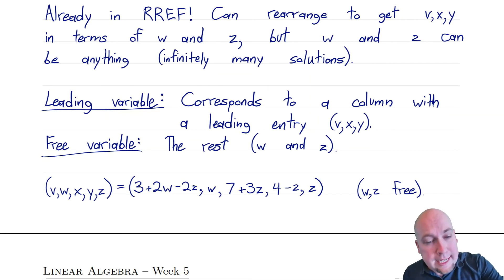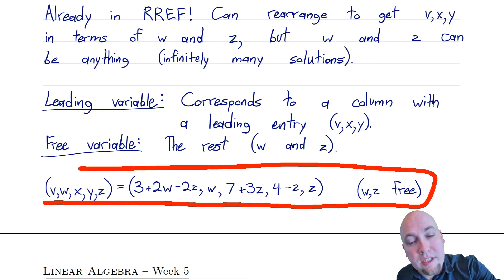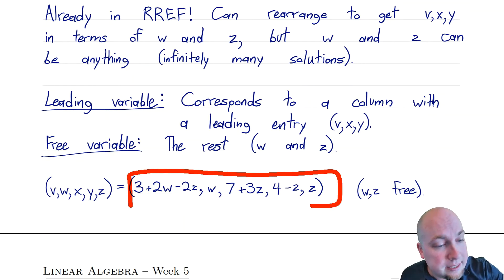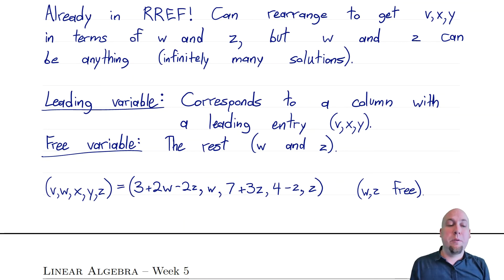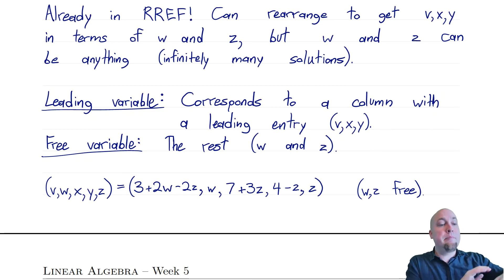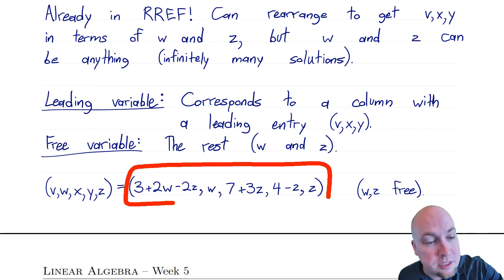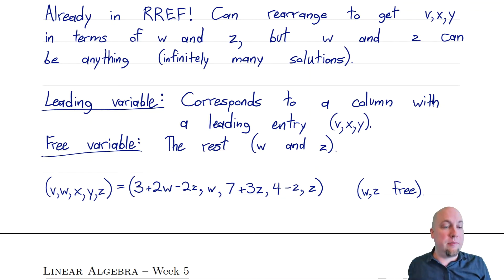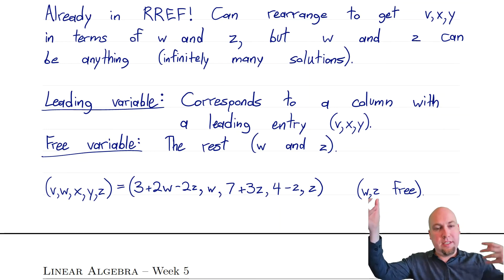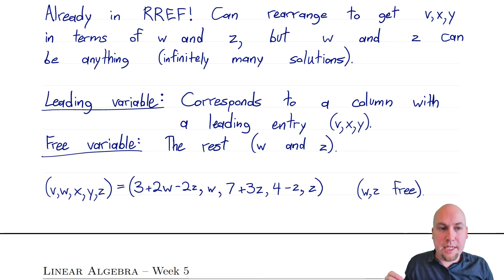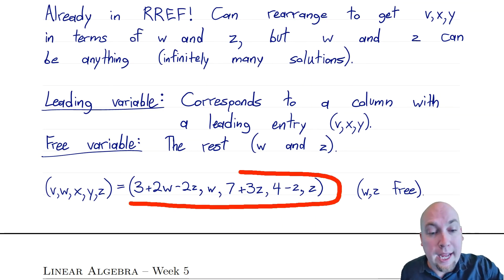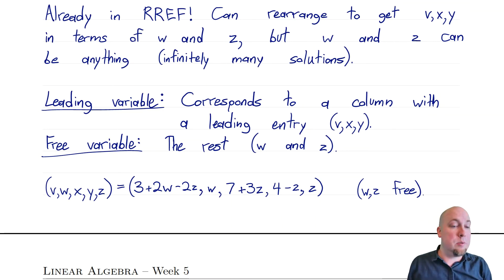Every single solution of this linear system looks like this vector for some choice of W and Z, and W and Z are free — they can be anything. No matter what value of W and Z you pick, you'll get a solution. Pick W and Z both equal to zero, you'll get one solution. Pick W equal to 7 and Z equal to minus 3, you'll get another. Every solution is described by a vector of that form.